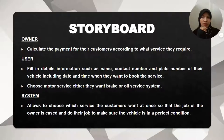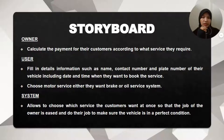Storyboard: The owner can calculate the payment for their customer according to what service they require. The user fills in detailed information such as name, contact number, and plate number of their vehicle, including the date and time when they want to book the service. The user then chooses a motorcycle service — either brake or full service — and the system allows the owner to choose which service the customer wants, to ensure the vehicle is in appropriate condition.